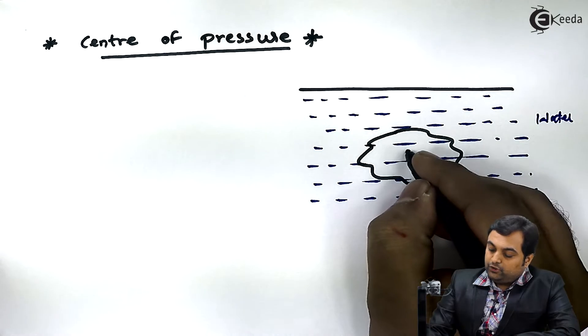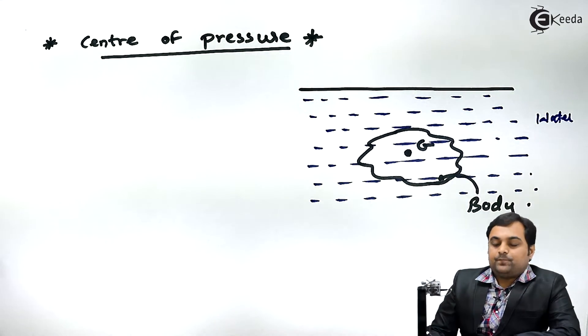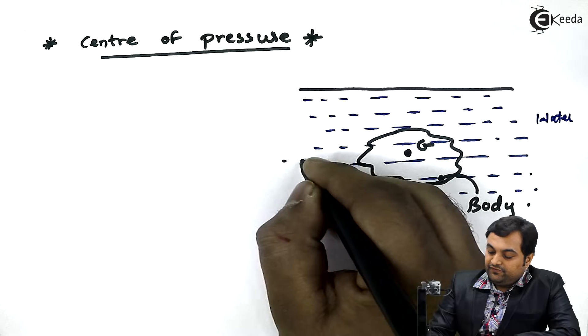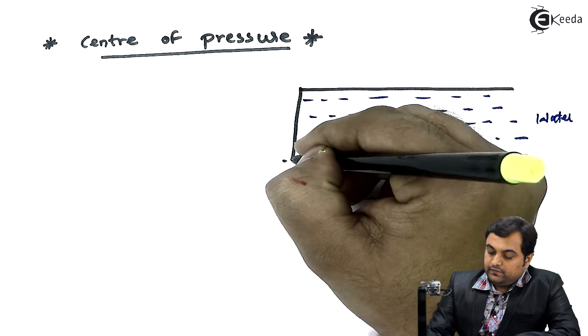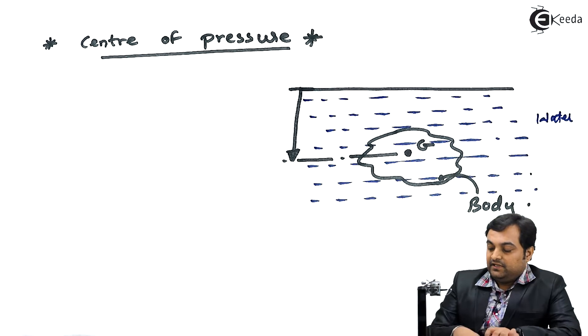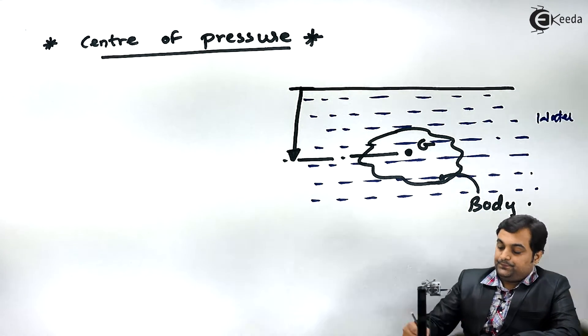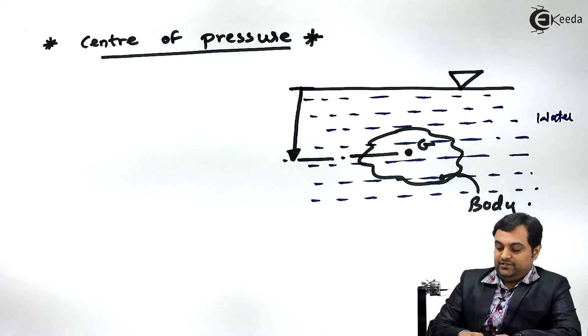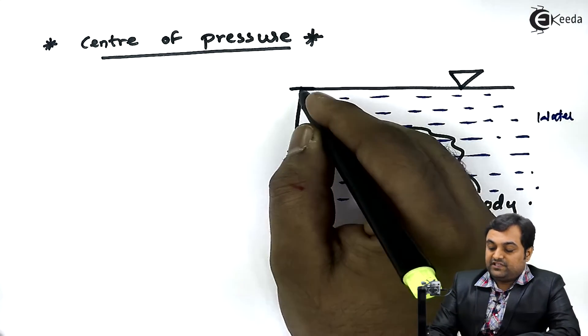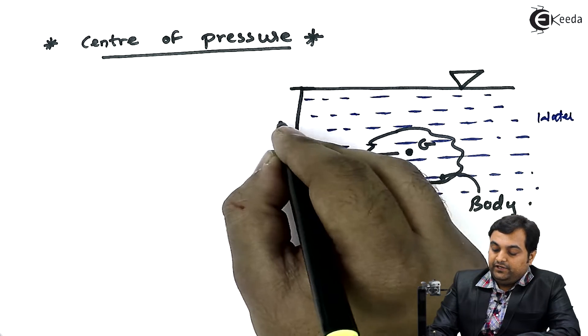The centroid of this body will be denoted by G. Its height from the free surface, the free surface of liquid is exposed to atmosphere. I'll show the symbol here. The height from the free surface up to the centroid or center of gravity would be denoted by H bar.